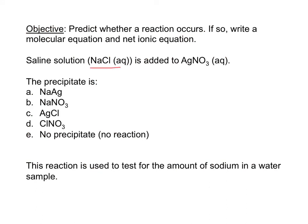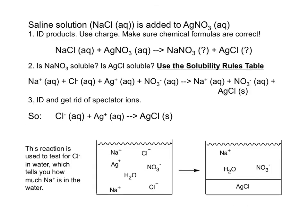Let's predict whether this reaction occurs. Stop the video and write a molecular equation and net ionic equation. The answer is yes — this reaction does occur and is used to test for the amount of sodium in a water sample. Let's check solubility. Here is our ionic equation. The sodium ions and nitrate ions are the spectator ions, and here's what's happening to form the silver chloride precipitate.